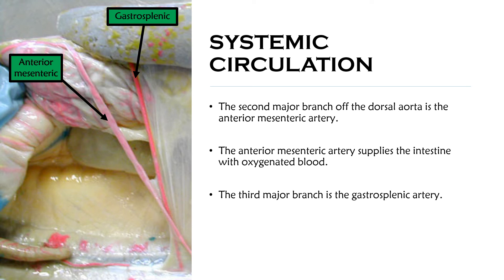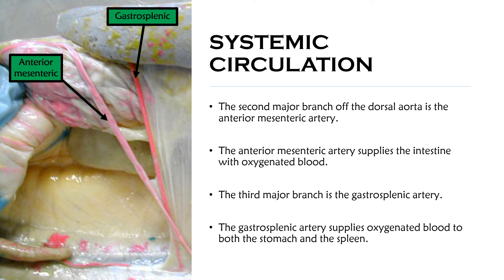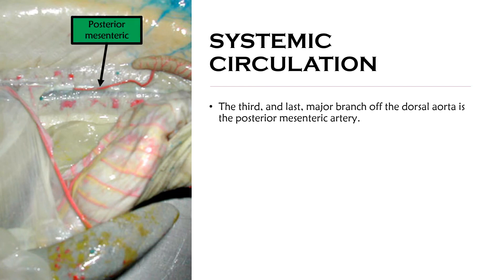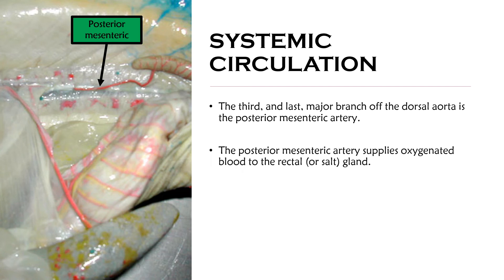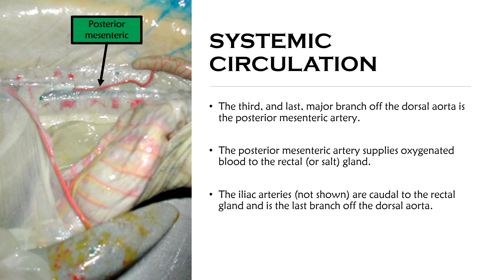The third major branch off the dorsal aorta is the gastrosplenic artery, which supplies oxygenated blood to both the stomach and the spleen. The last major branch off the dorsal aorta is the posterior mesenteric artery, and this is one of the exceptions to the rule — the posterior mesenteric artery supplies oxygenated blood to the rectal or salt gland.